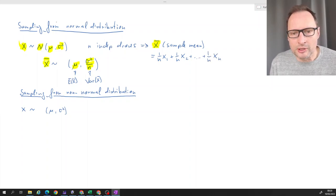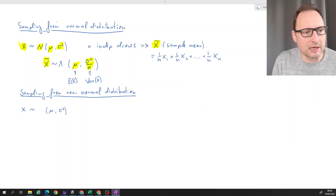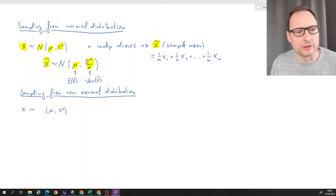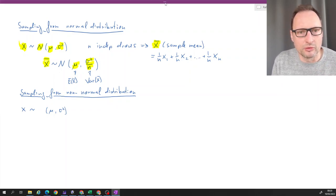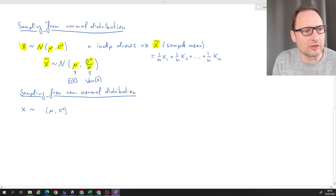If these x₁, x₂, and xₙ up to xₙ are all normally distributed random variables, then we know as linear combinations of normally distributed random variables are also normal, that x̄ has to be a normal distribution. So we can derive that with all the knowledge we already have. We don't need any other fancy theorem for that.